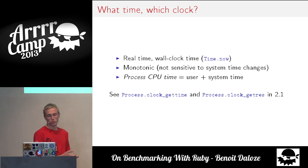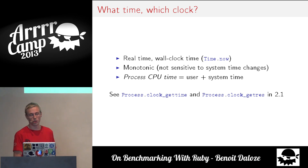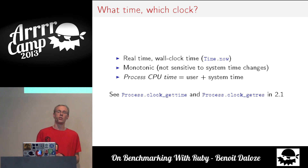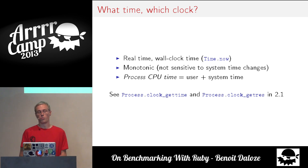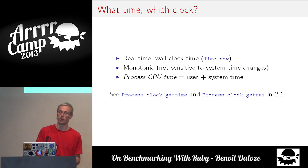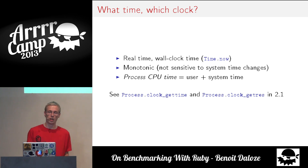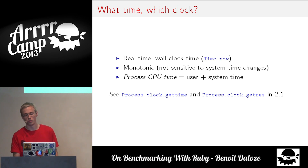To solve the problem of only having Time.now as a real-time clock, in MRI 2.1 we added two methods: clock_gettime and clock_getres. clock_gettime gets time with a specific clock, and clock_getres gives the resolution of that clock. It's implemented on Linux and OS X, and soon on Windows.